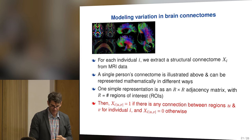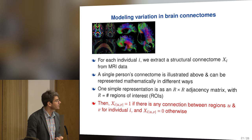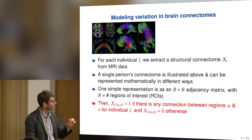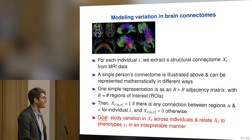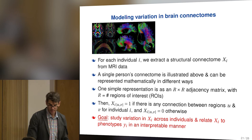If you make it binary, X_i,u,v equals one if there's any connection between regions u and v for individual i, and X_i,u,v equals zero otherwise. Then you have graph-valued data. Our goal here is to study how brain connectomes vary across people, and how that variation relates to traits of the people. We'd like to do that in an interpretable manner.